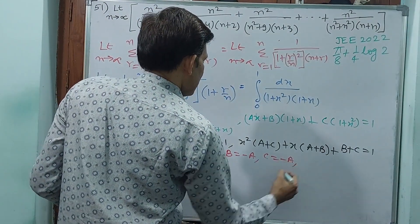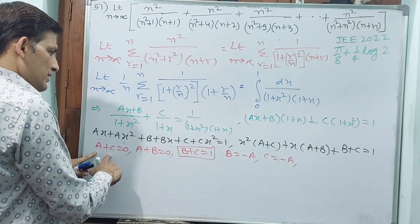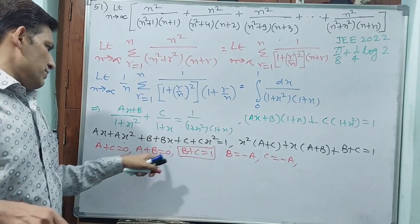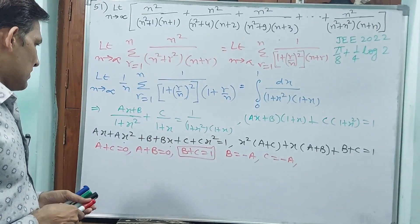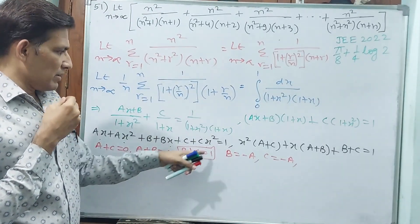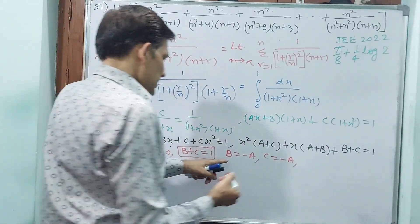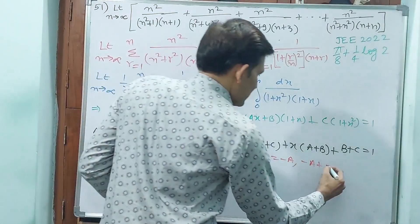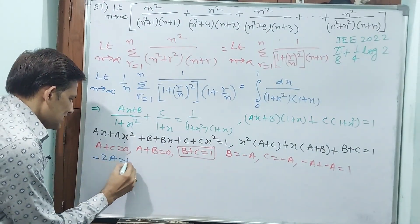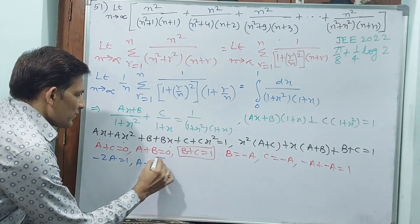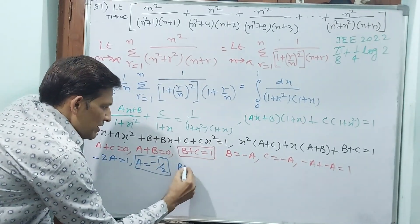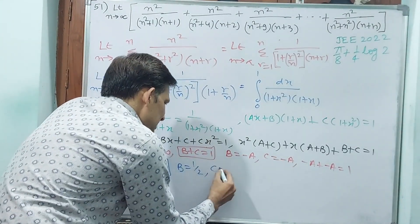From a plus b equals 0: a equals minus b. Substituting into b plus c equals 1: b is minus a, c is minus a, so minus a minus a equals 1, meaning minus 2a equals 1, so a equals minus 1 by 2. Then b equals 1 by 2 and c equals 1 by 2.